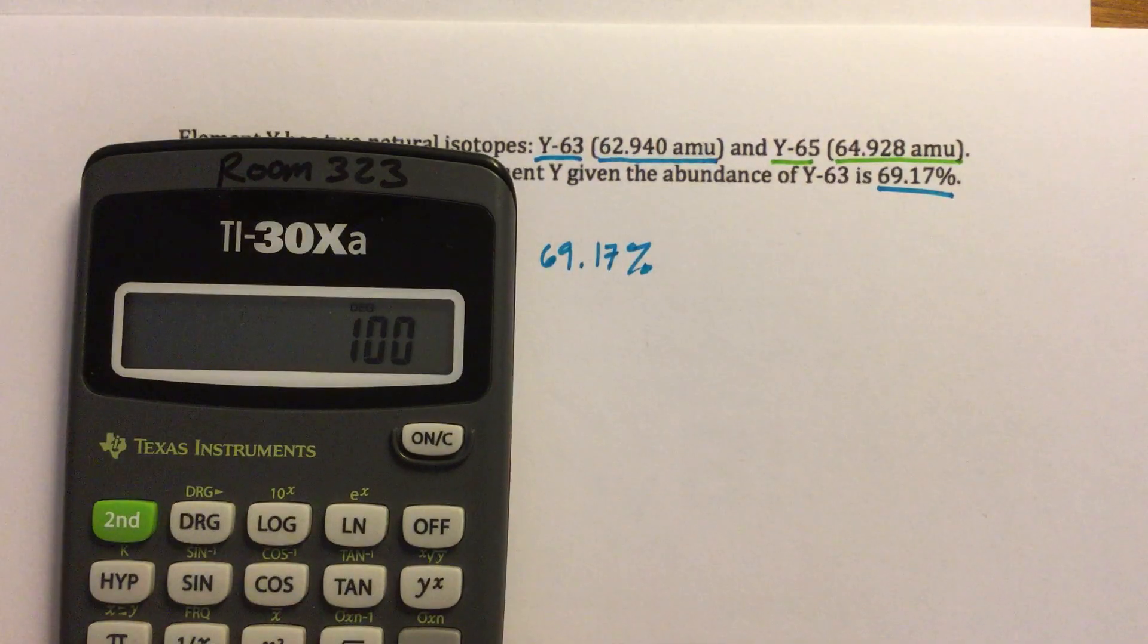They should add up to 100. So what we can do to find the missing percentage, since we have one of them, is just do 100 minus the percentage we're given. And we get this percentage, 30.83.